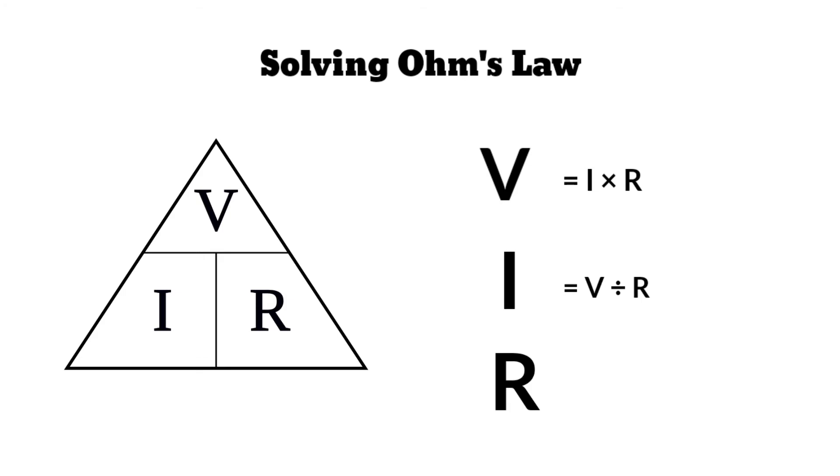To find the R or resistance, cover the R on the triangle, leaving V or voltage divided by I or current equals R or resistance.